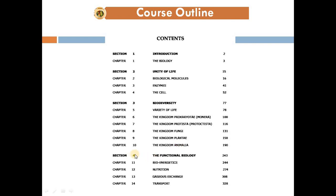Section 4 is Physiology, or Functional Biology. We have living organisms and body functions. Chapter 11 is Bio-energetics, covering photosynthesis and cellular respiration. Chapter 12 is Nutrition, covering the human digestive system and other animals.